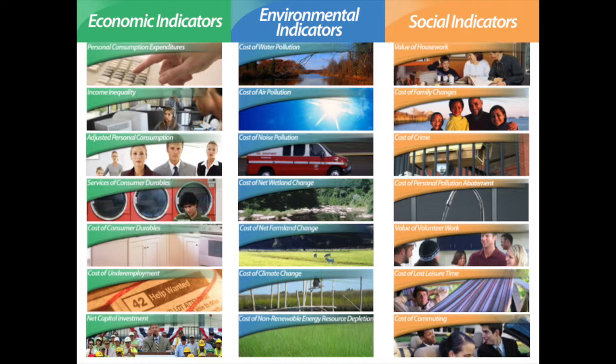The genuine progress indicator was developed in recognition of the inadequacy of gross domestic product as an indicator of well-being. Gross domestic product does not distinguish between good and bad spending, distribution of growth, depletion of natural capital and ecosystem services, or include things that have no market price but are good for our society.